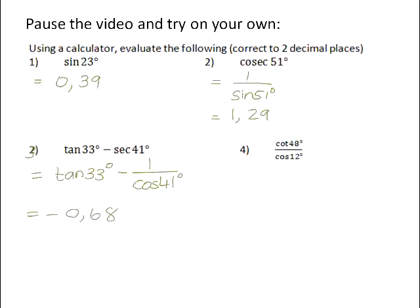And then finally, number four, you need to be a little bit careful with number four. Again, we do not have a cot button on our calculator. So we have to work with the reciprocal. The reciprocal function is tan. So cot of 48 degrees will be equal to 1 over the tan of 48 degrees. And then this big fraction line here means divide. So we've got to divide that by the cos of 12 degrees. So if we punch that into our calculators, you should get 0.92.